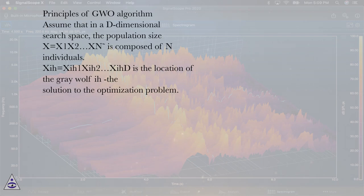Principles of GWO algorithm. Assume that in a D-dimensional search space, the population size X=X1X2...XN is composed of N individuals. Xh=Xh1Xh2...XhD is the location of the gray wolf, the solution to the optimization problem.